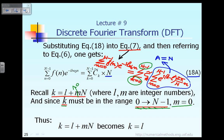For that reason small m must equal 0, because otherwise the value of k will not be in that range. When m is equal to 0, it means k is the same thing as l. So when m equals 0, it implies k must equal l according to that formula. What does that mean? It means if you look at equation 18A, l is the same thing as k, and this summation on k is only valid for the situation where k equals l.